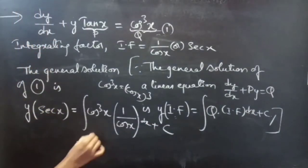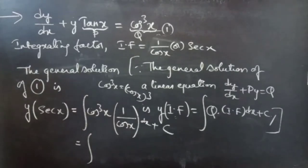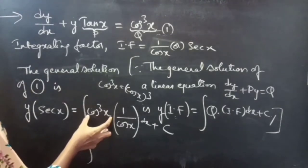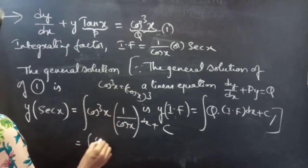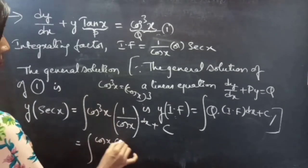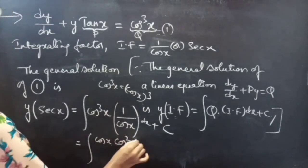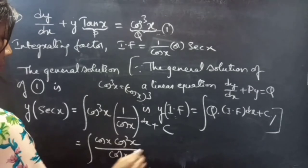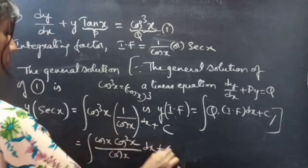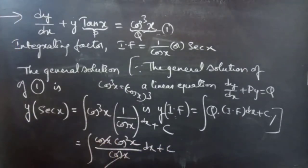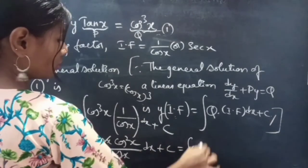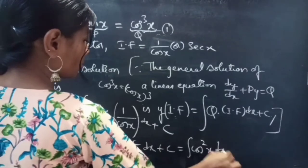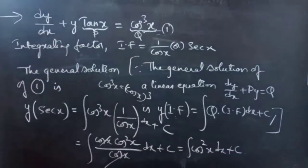We split cos³x as cos x times cos²x, divided by cos x. So the 1/cos x and cos x cancel, and we get the integral of cos²x dx plus C.